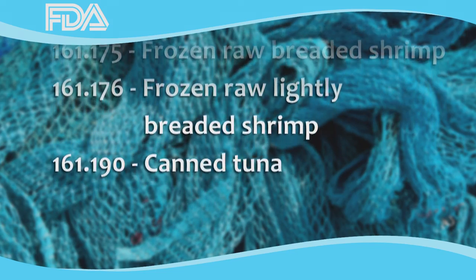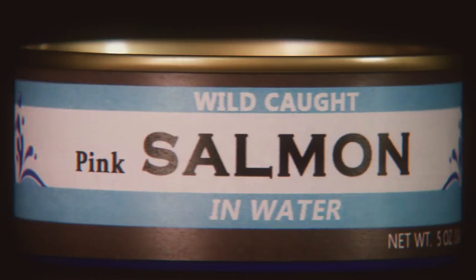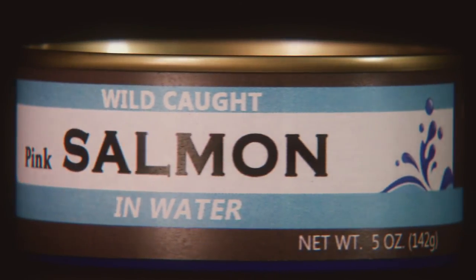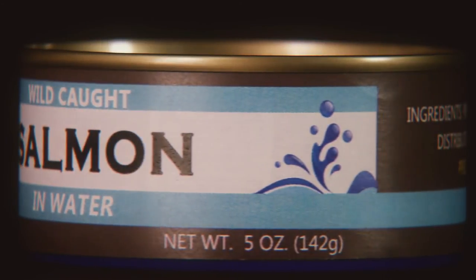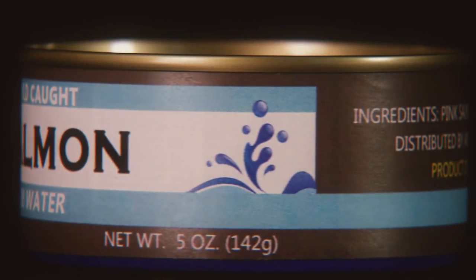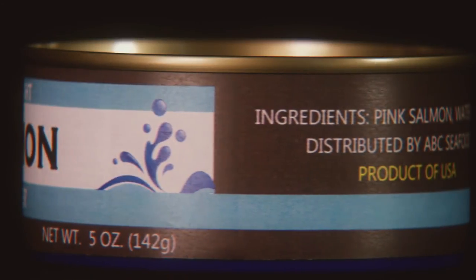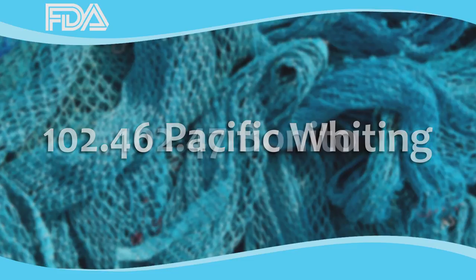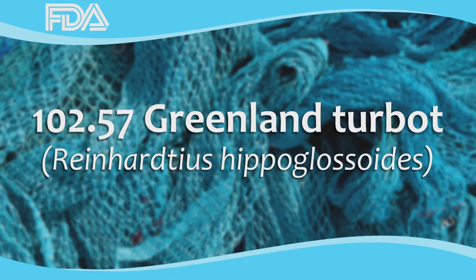The common or usual name of a food, which may be a coined term, shall accurately identify or describe, in as simple and direct terms as possible, the basic nature of the food or its characterizing properties or ingredients. There are common or usual name regulations for Pacific Whiting, Benito, King and Snow Crab Meat, and Greenland Turbot.